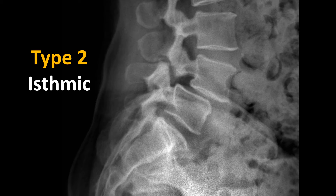Here is a radiolucency extending through the pars and an anterior translation of L4 in relation to L5. The spinous process remains where it should be, but everything else has moved forward. This is a classic appearance of a type 2 isthmic spondylolisthesis. The most common type of stress fracture in the spine is a pars defect. L5 is the most common area, followed by L4, L3, L2, and L1.